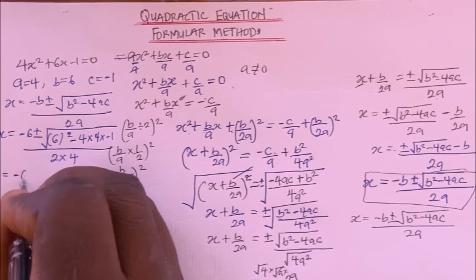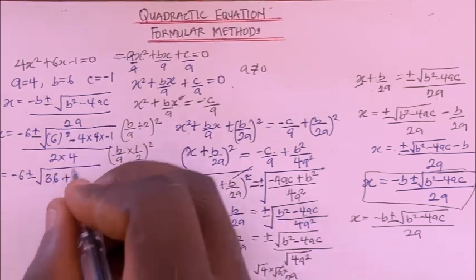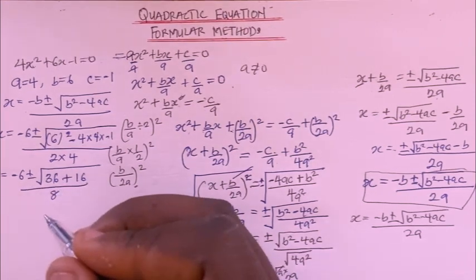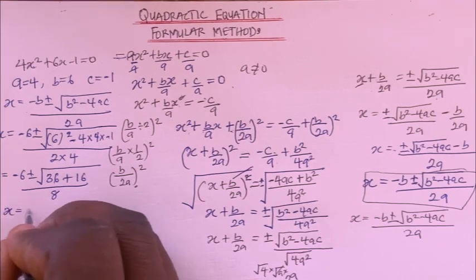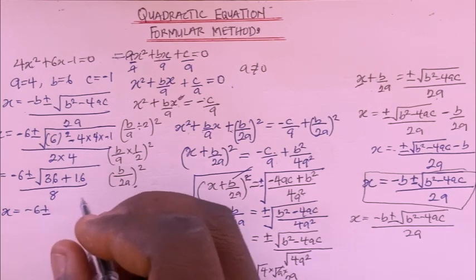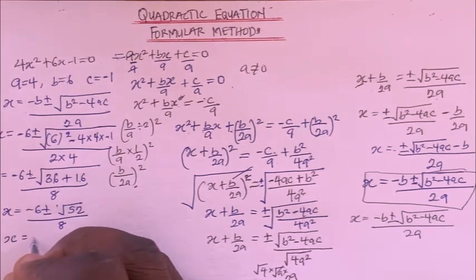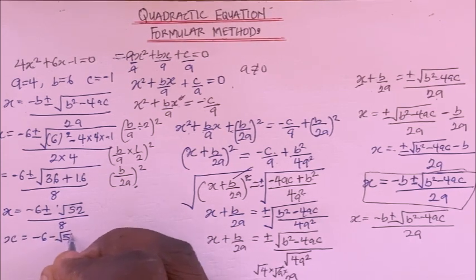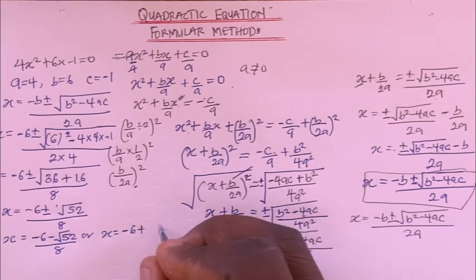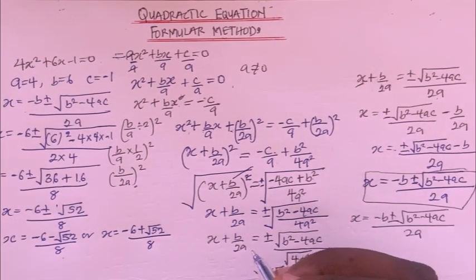Substituting: x = −6 ± √(6² − 4 × 4 × (−1)) / (2 × 4). Inside the root: 6² = 36, and minus times minus gives plus, so 4 × 4 × 1 = 16, giving 36 + 16 = 52. The denominator is 8. So x = (−6 ± √52) / 8, giving two roots: x = (−6 − √52)/8 or x = (−6 + √52)/8.